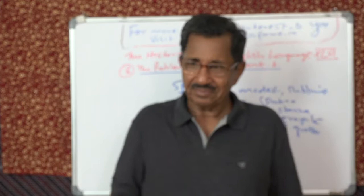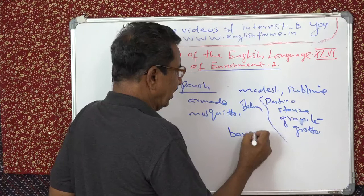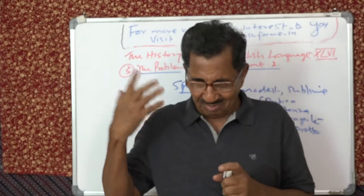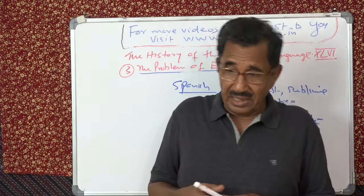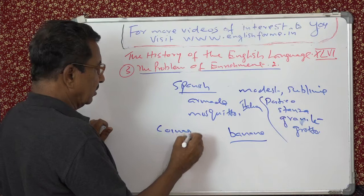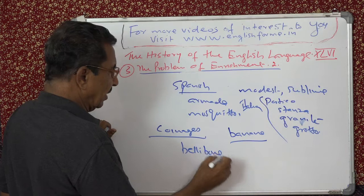Another very common word is banana — when you eat banana, you can think that this word is from Spanish. Then you have cocoa, maize, armada, and so on. Then there are coinages — new words. Bellibone is a word coined by Spenser. Bell means beauty.